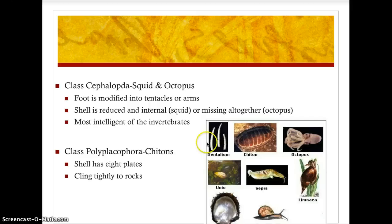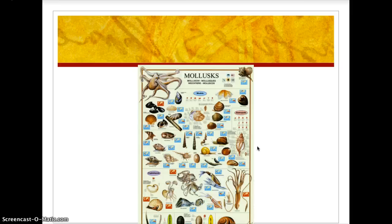Class Cephalopoda — cephala meaning head, poda meaning foot — includes squid and octopus. The foot is modified into tentacles or arms. The shell is reduced and internal in the squid, becoming the pen, or missing altogether in the octopus. These are among the most intelligent of invertebrates. Class Polyplacophora are the chitons — organisms with a shell made of eight plates that cling tightly to rock surfaces. That concludes the lecture on worms and mollusks.